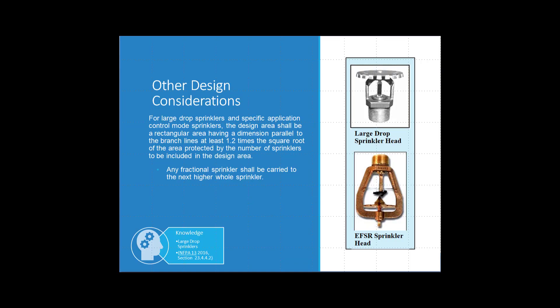For specific application control mode sprinklers, the design area shall be a rectangular area having a dimension parallel to the branch lines at least 1.2 times the square root of the area protected by the number of sprinklers to be included in the design area. Any fractional sprinklers shall be carried to the next whole sprinkler.